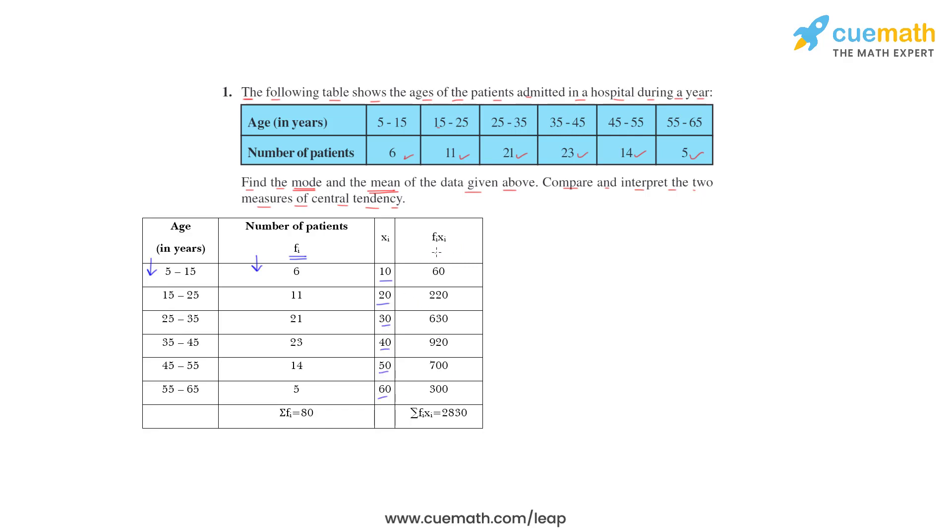Now we have to find FiXi. So multiply 6 into 10, 60. 11 into 20, 220. 21 into 30, 630. 23 into 40, 920. 14 into 50, 700. And 5 into 60 is 300. Sum of all Fi is 80 and sum of all FiXi is 2830.